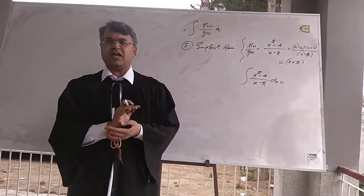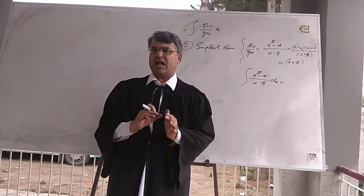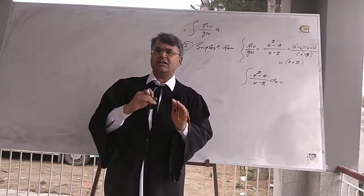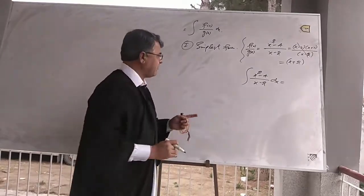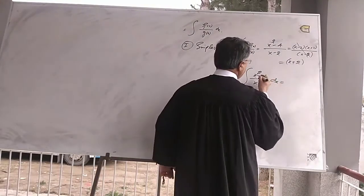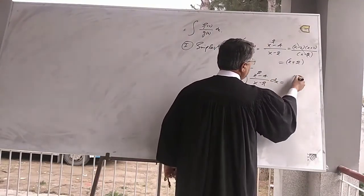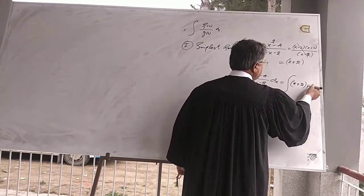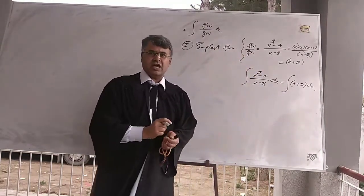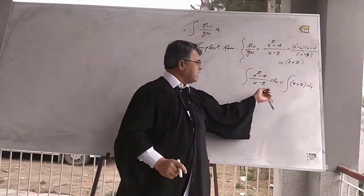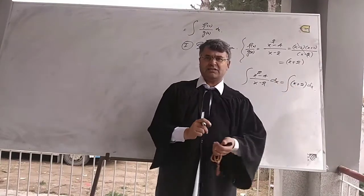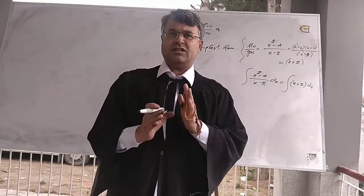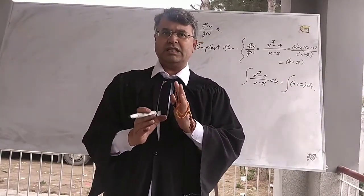The reason is that the function is not in the simplest form. First we have to convert the function into its simplified form, which is equal to x plus 2. The equivalent function of x squared minus 4 divided by x minus 2 is x plus 2, and now we can integrate x plus 2.